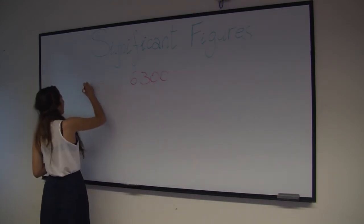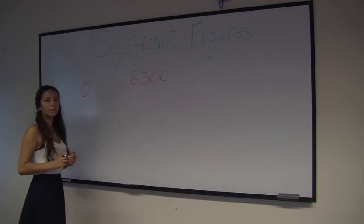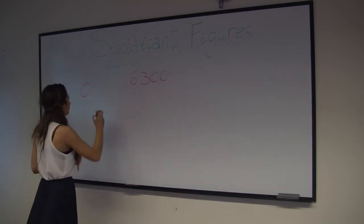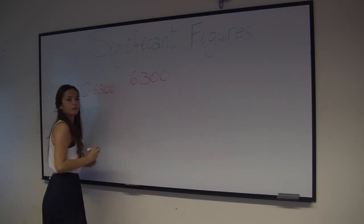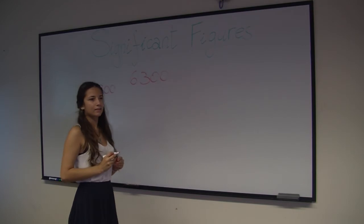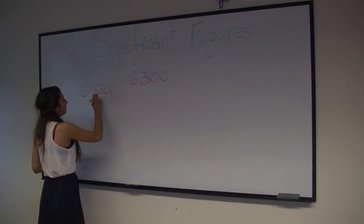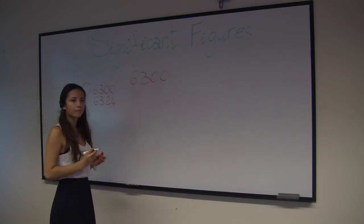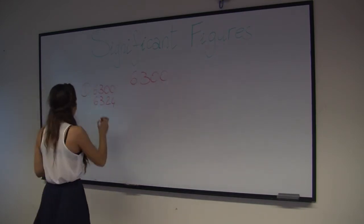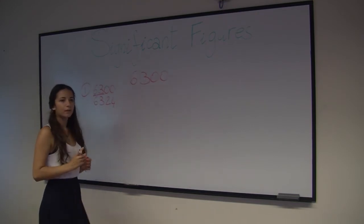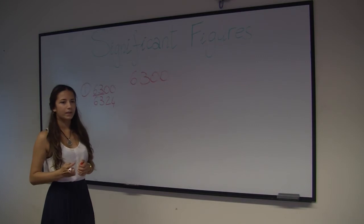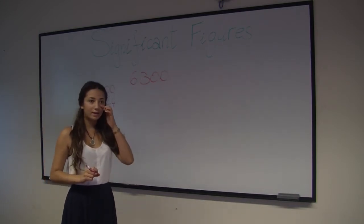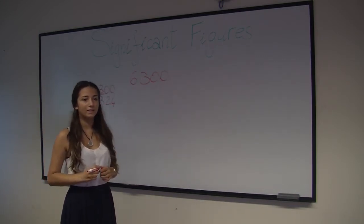For example, we can say that the Brown undergraduate student population is above 6300 students. However, this number is not very precise. The actual number is 6324 students. Hence, only the first two digits in this number were significant. In order to communicate this concept in a concise and universal manner, we express the number 6300 in scientific notation.